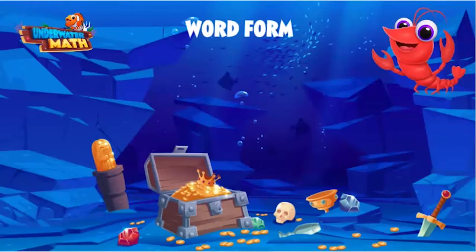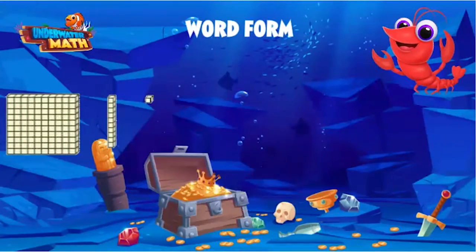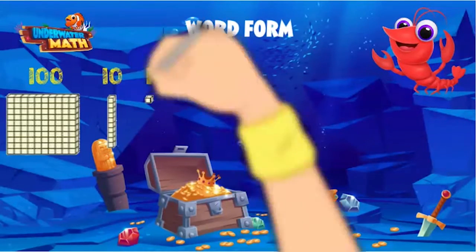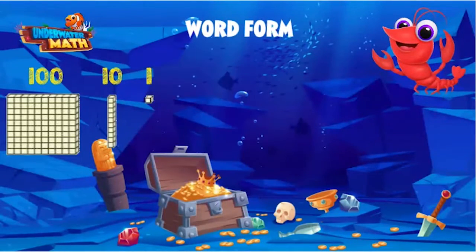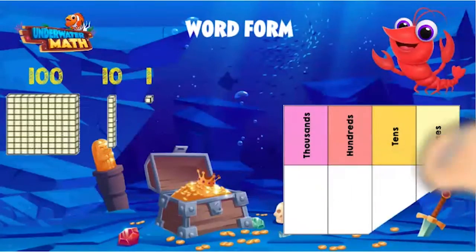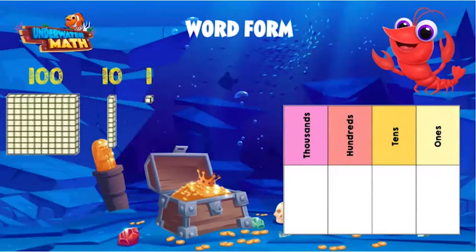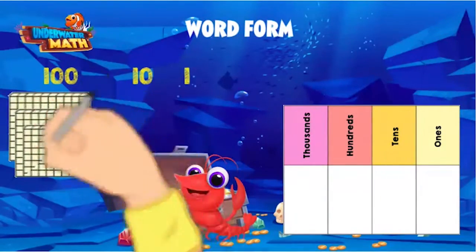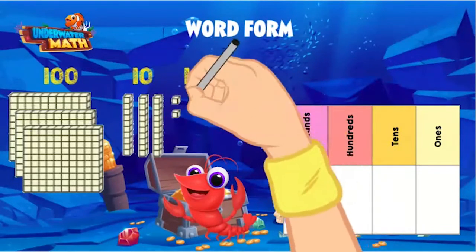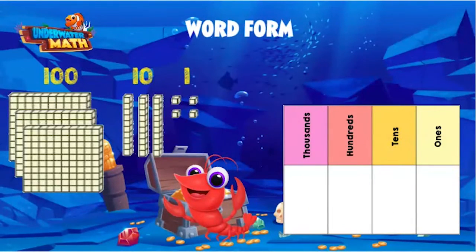Place value is something that will help you forever in math. You have seen these base 10 blocks before: the flat cube has a value of 100, the rod has a value of 10, and the single block has a value of one. To help us even more, we are going to use a place value chart. The total amount of money in dollars is represented by the base 10 blocks.